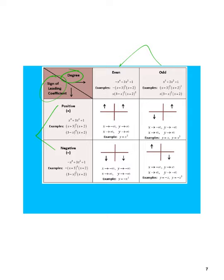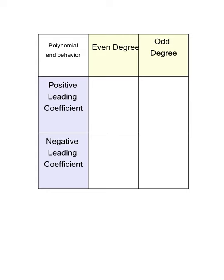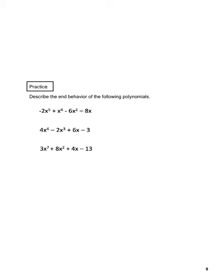Here's a blank one you could fill out for yourself. Now, for the end behavior of the following polynomials: when we look at these, the first thing we've got to do is figure out where the leading term is. The leading term on this first one is negative 2x to the fifth, so we have an odd exponent and a negative leading coefficient.